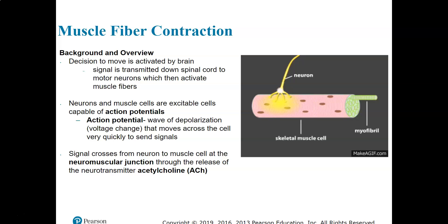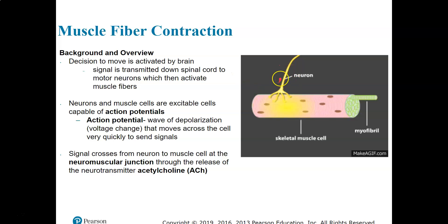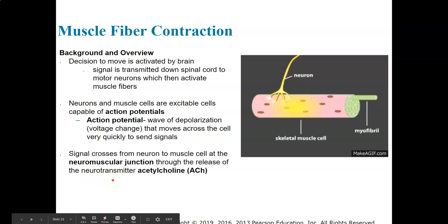Both neurons and muscle cells are excitable cells capable of action potentials. These action potentials are waves of depolarization — a change of the voltage across the cell membrane — that send a signal very quickly across the whole cell. The signal actually moves from the neuron to the skeletal muscle not as an electrical signal, but as a chemical signal in the form of a neurotransmitter called acetylcholine, ACh.